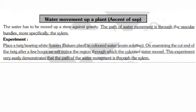Experiment: Place a plant twig bearing white flowers or balsam plant in coloured water, particularly eosin solution, and examine the cut end of the twig. After a few hours, we will notice the region through which the coloured water moved. This experiment very easily demonstrates that the pathway of water movement is through the xylem. Ascent of sap is explained by this experiment using a balsam plant and eosin solution.